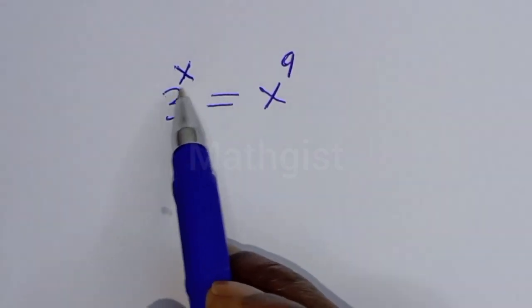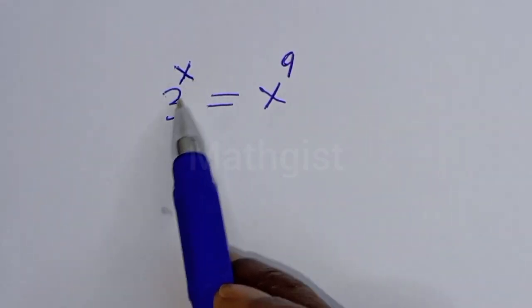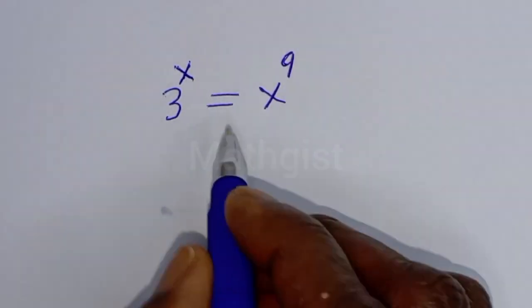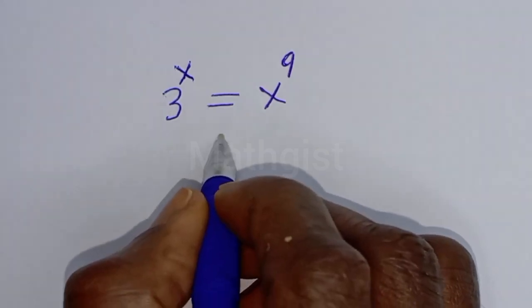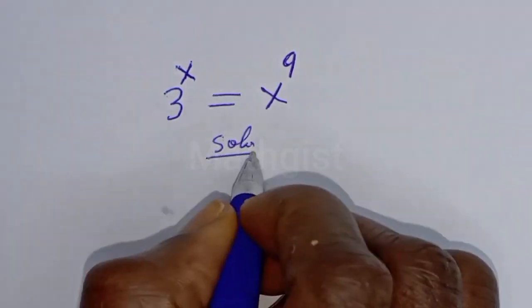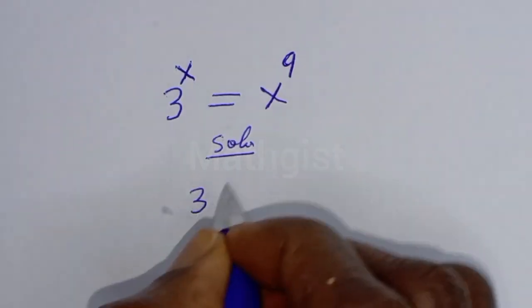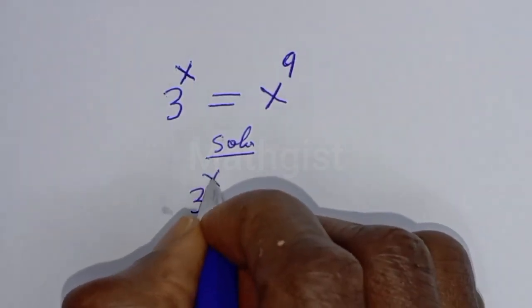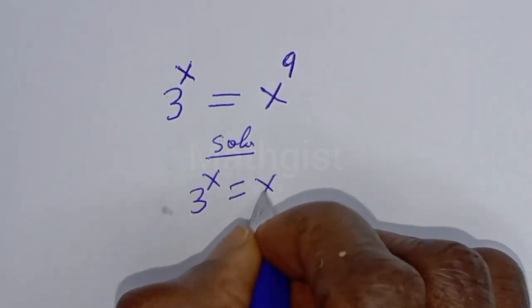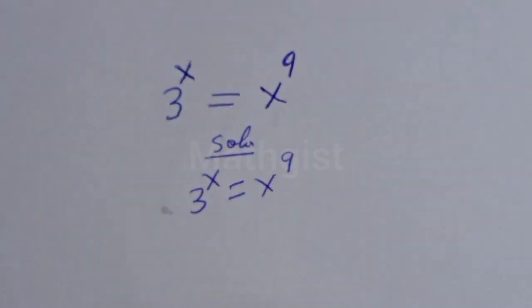How to solve for s from this given smart Olympiad problem: t raised to power s is equal to s raised to power 9.